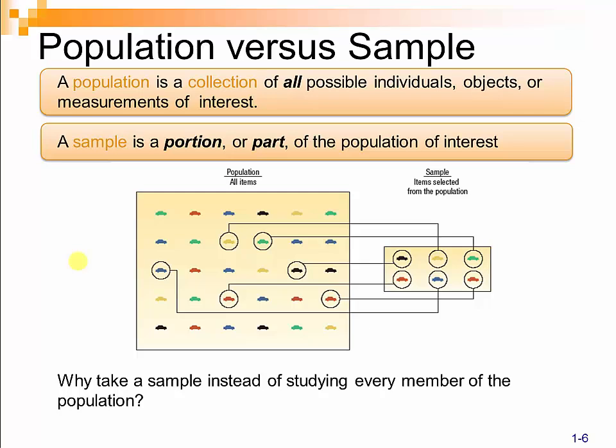Another problem with a population census is if that population study happens to be destructive during the analysis. Think of it in the form of healthcare and pharmaceutical testing. If the test we did on our drug was destructive — in other words, in order to test it we would destroy it and make it unusable — and we did that on every possible pill, we would lose every pill we have and no longer be able to use them to treat people. So when destruction of the item being studied may be required, we take a sample subset of the population instead.